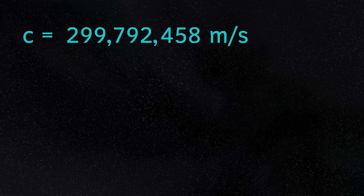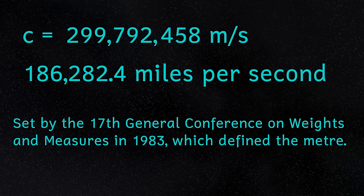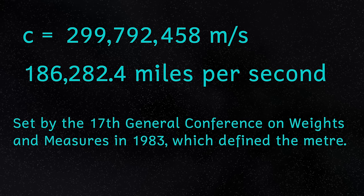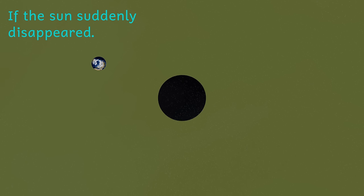Before we start, let's look at what the speed of light actually is. It's 299,792,458 metres per second — that's 186,282.4 miles per second. This value has now been set and won't change; it was actually set in 1983. The speed of light though isn't just the speed of light, it's the speed of causality — it's the universe's ultimate speed limit.